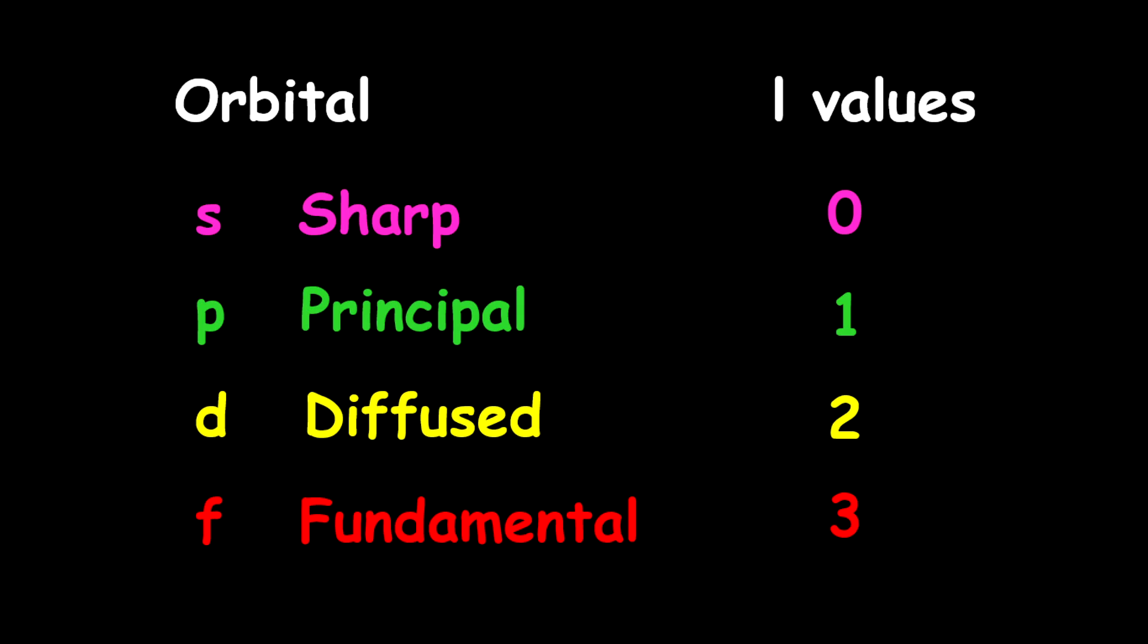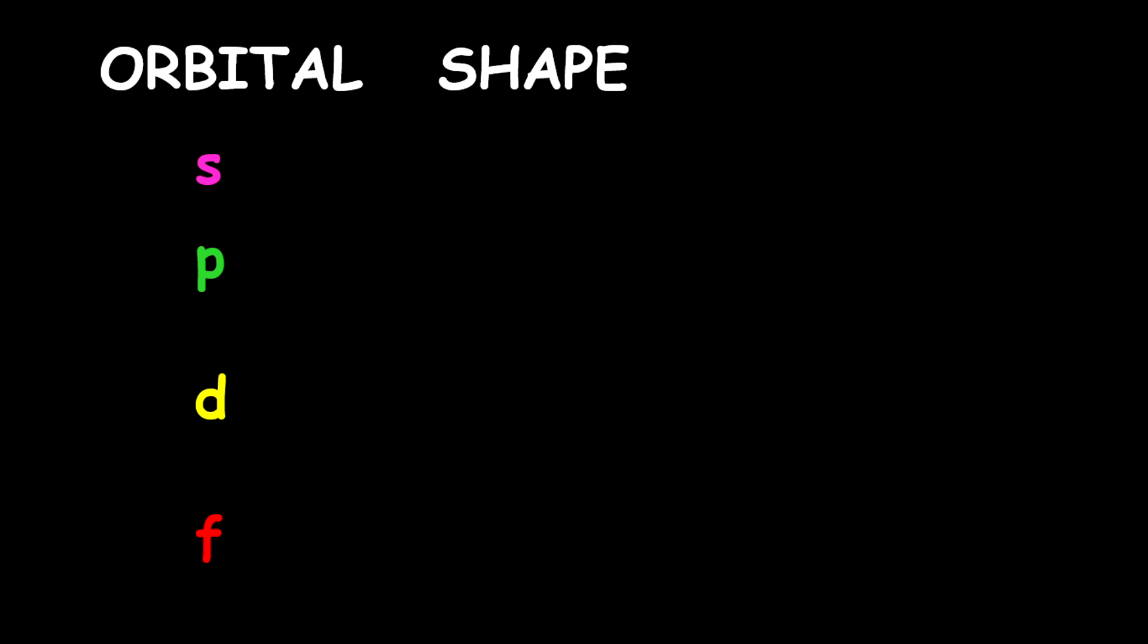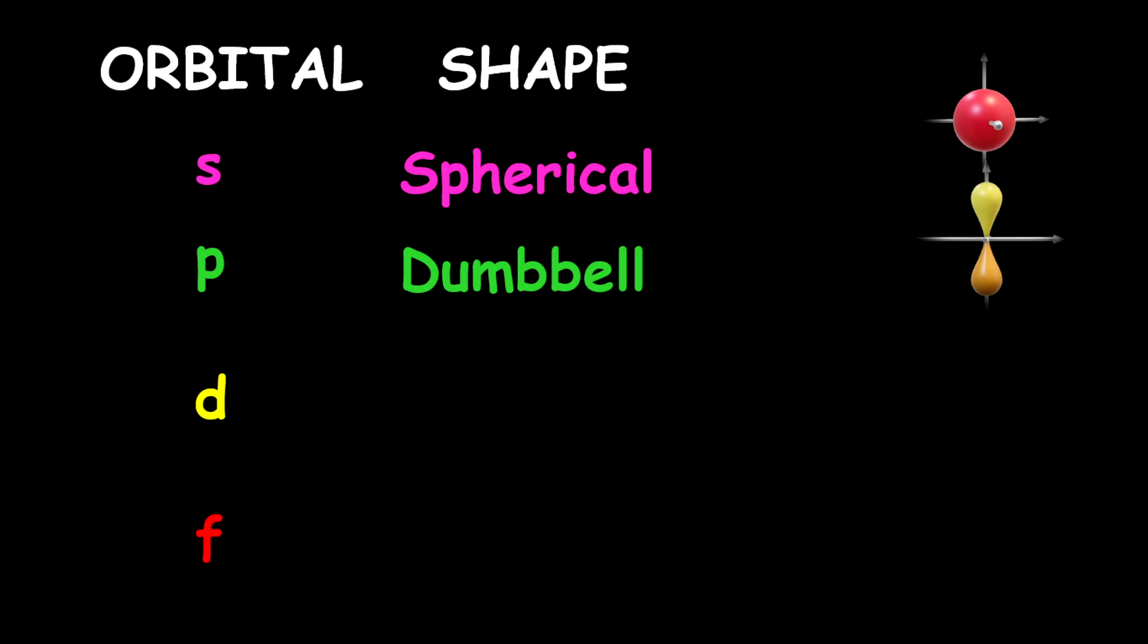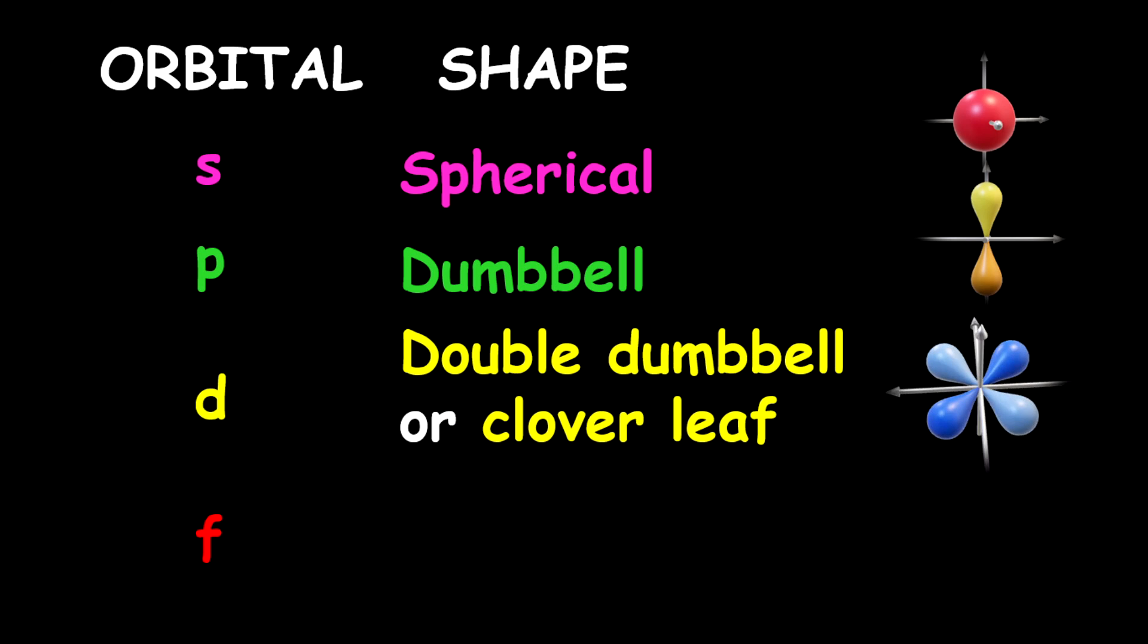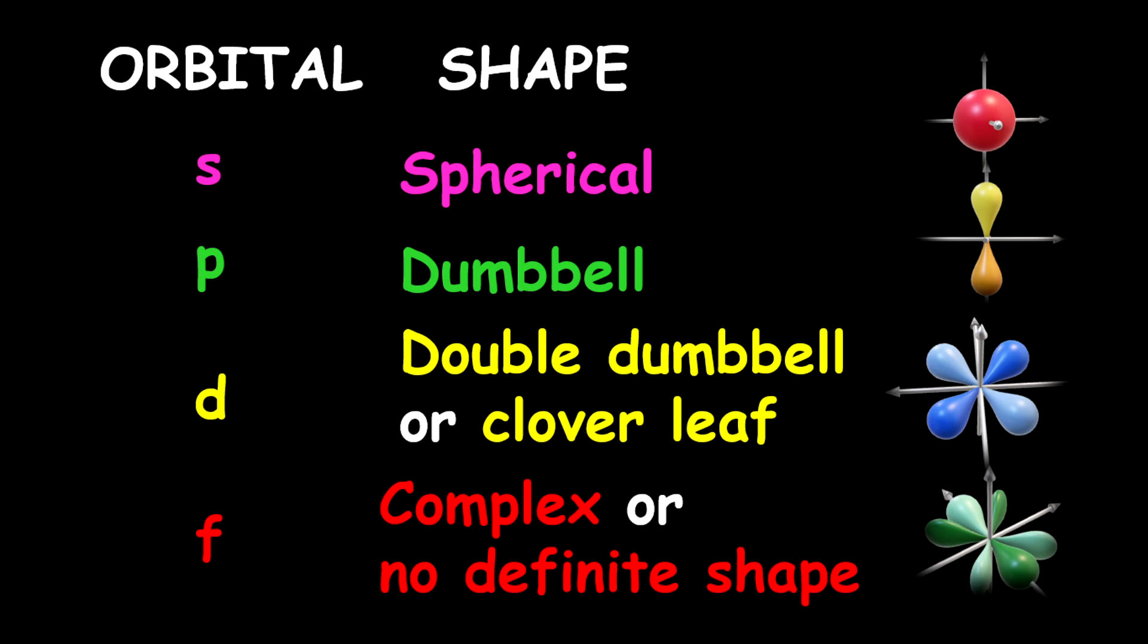Now let's look at the shape of each of these orbitals. The S has a spherical shape. For the P orbital, there is a dumbbell shape. For the D orbital, there is a double dumbbell or a cloverleaf shape. And for the F orbital, this one is complex, or otherwise you can say it has no definite shape.